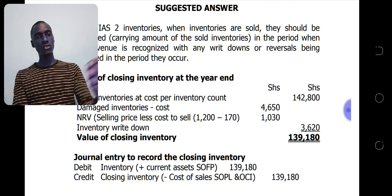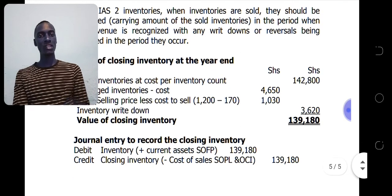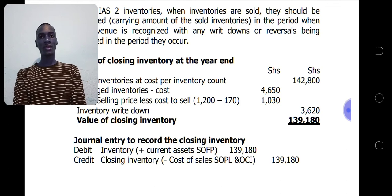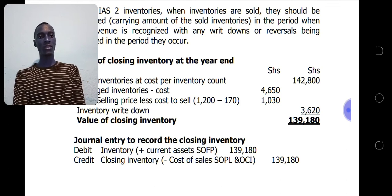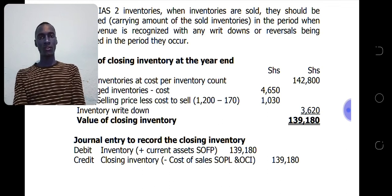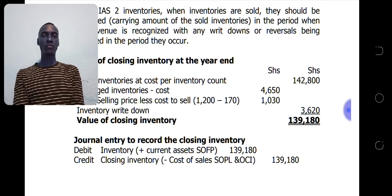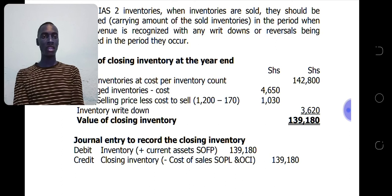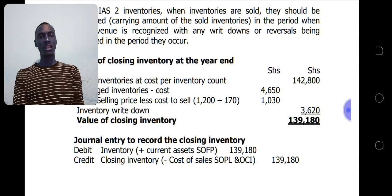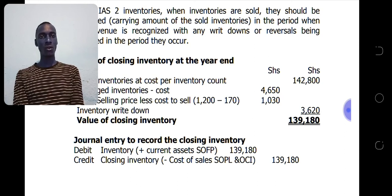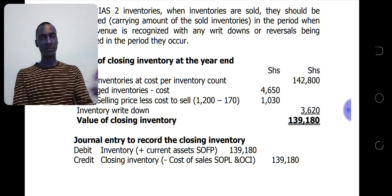The journal entry to record the closing inventory: debit inventory — current assets in the statement of financial position — $139,180; credit closing inventory — cost of sales in the statement of profit or loss — $139,180. The inventory write-down of $3,620 should be recognized as an expense in the statement of profit or loss at year end, and can be taken as an operating expense.